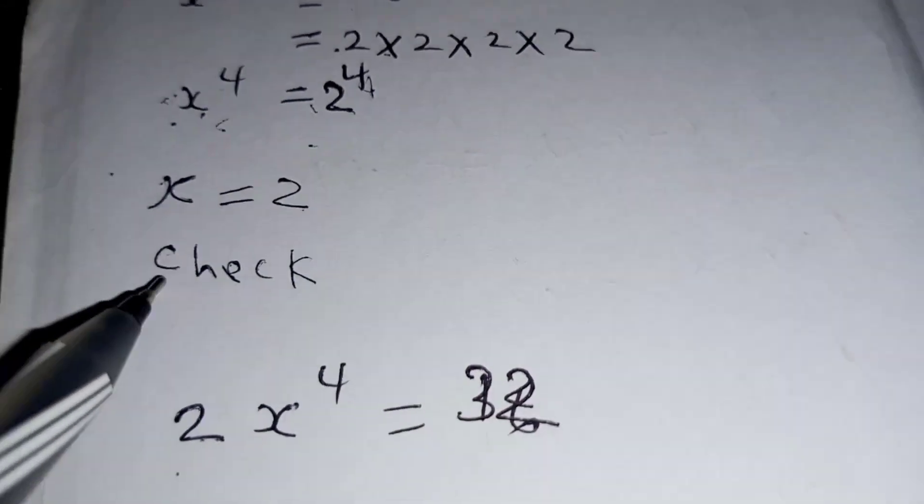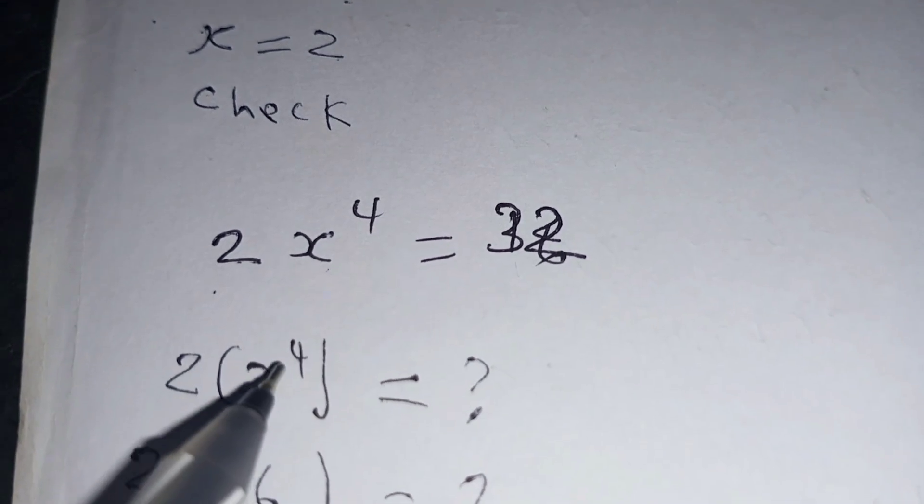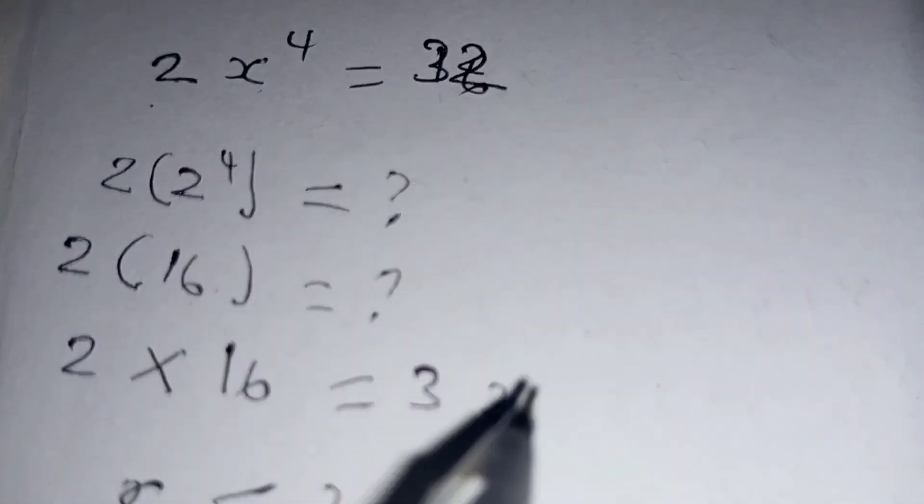We confirmed our answer by substitution: where you have x you substitute it with 2, and 2^4 is 16, 16 times 2 is equal to 32.